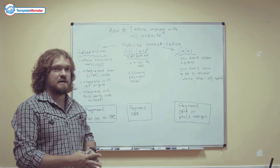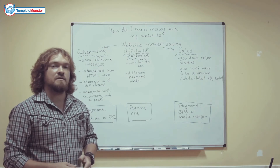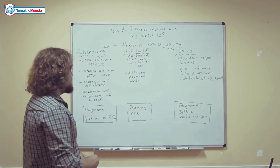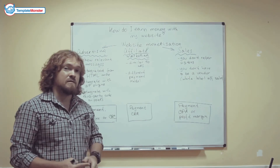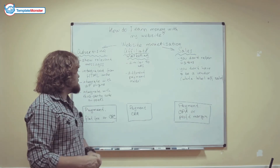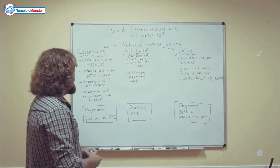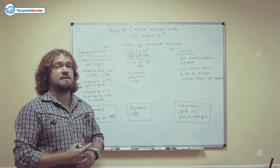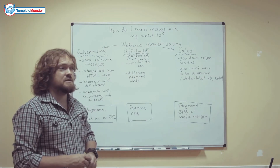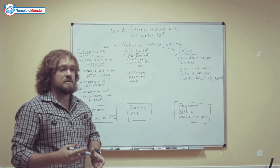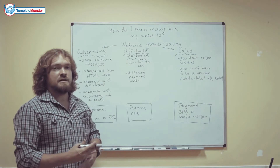You may integrate the ads in several ways. The most popular one is banner advertising. If you have a simple HTML-based website, you may integrate the advertising messages within the code. If you have a CMS-based website, for example based on WordPress or Joomla, you may integrate the ads using special plugins or extensions for that CMS. The most popular way is integrating third-party code snippets — for example, BuySell Ads or Google AdSense.